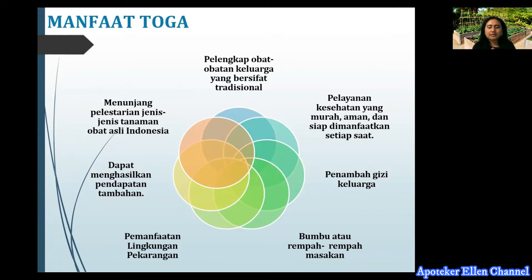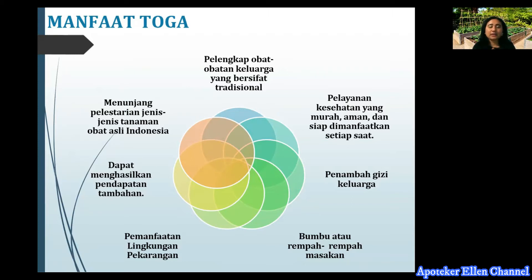Yang keempat, toga bisa dimanfaatkan sebagai bumbu atau rempah-rempah masakan, seperti bawang putih, bawang merah, daun bawang, lengkuas, jahe, dan lain sebagainya. Yang kelima, sebagai pemanfaatan lingkungan pekarangan — jika punya pekarangan rumah yang masih ada, bisa dimanfaatkan. Yang keenam, dapat menghasilkan pendapatan tambahan karena dapat dijual kembali. Dan yang terakhir, dapat menunjang pelestarian jenis-jenis tanaman obat asli Indonesia — secara tidak langsung kita ikut membantu pemerintah dalam melestarikan tumbuhan asli Indonesia, khususnya tumbuhan obat.